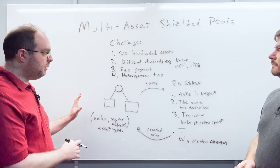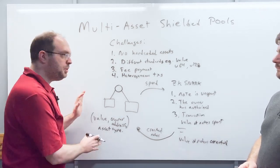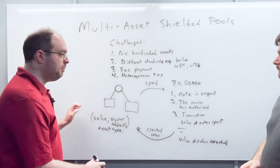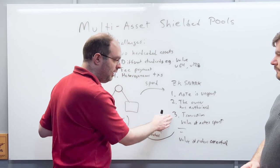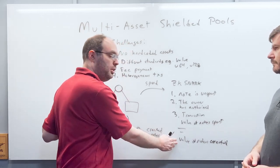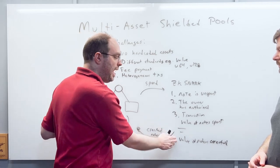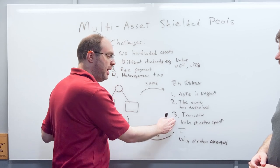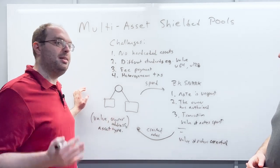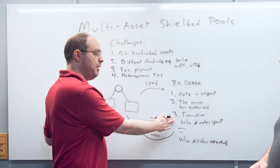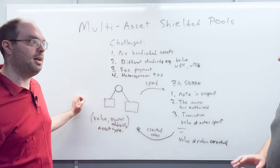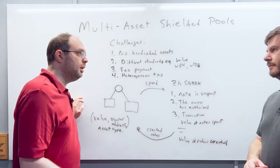Adding the asset type field is conceptually simple, but it requires changes to the rest of the protocol. In the single-asset case, we just check that the sum of values of spent notes equals the sum of values of created notes. In the multi-asset case, we don't sum all values together — we must sum values independently for each asset type. This complicates the circuit quite a bit.